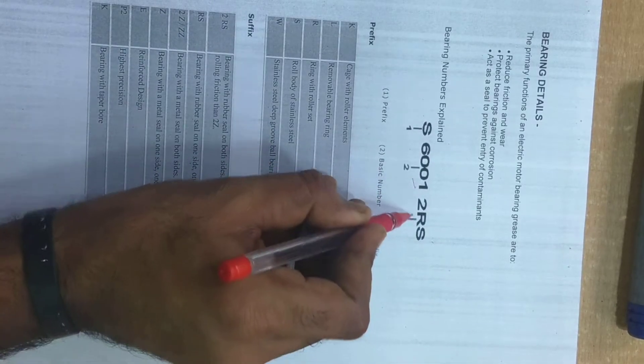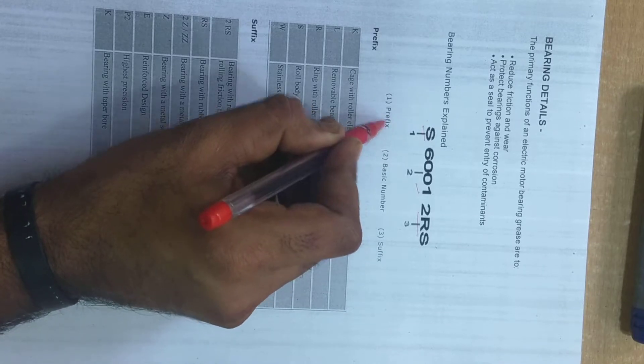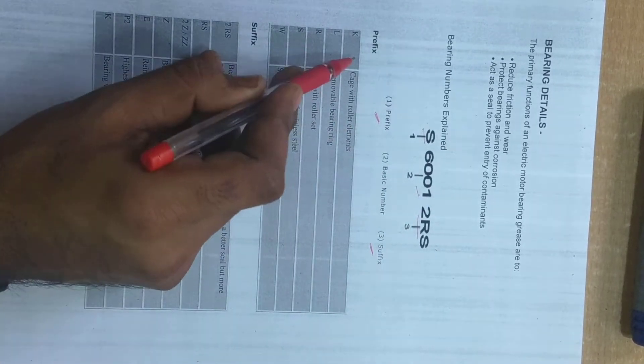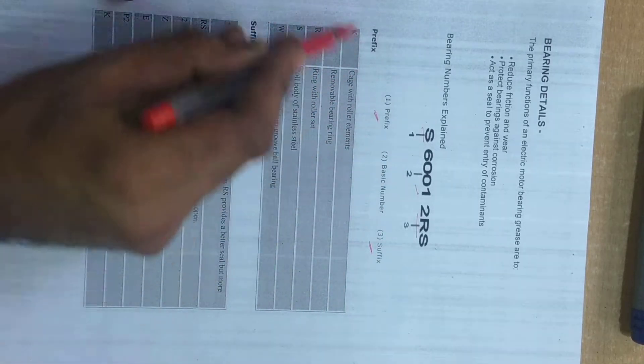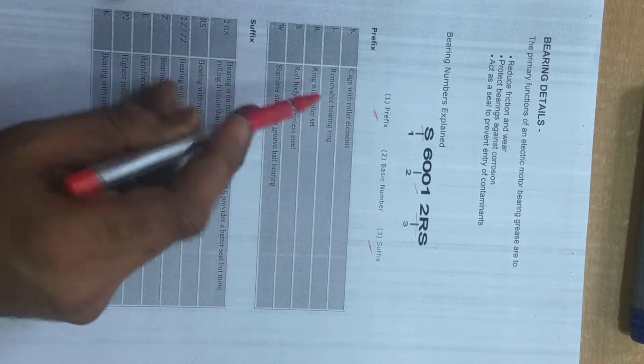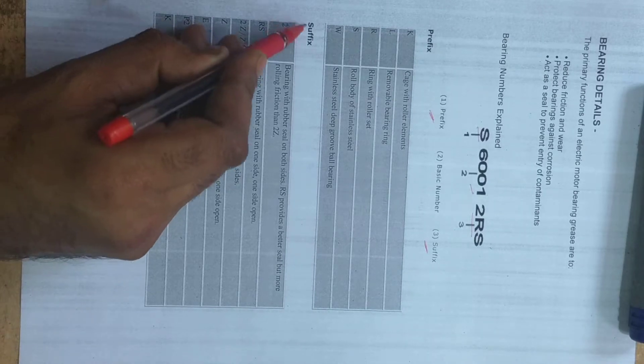Now we have talked about this, now this and this part. This is the prefix part and this is the suffix part. Suffix is important. Prefix we hardly see in the bearing cover. Go through prefix and we will discuss about the suffix.